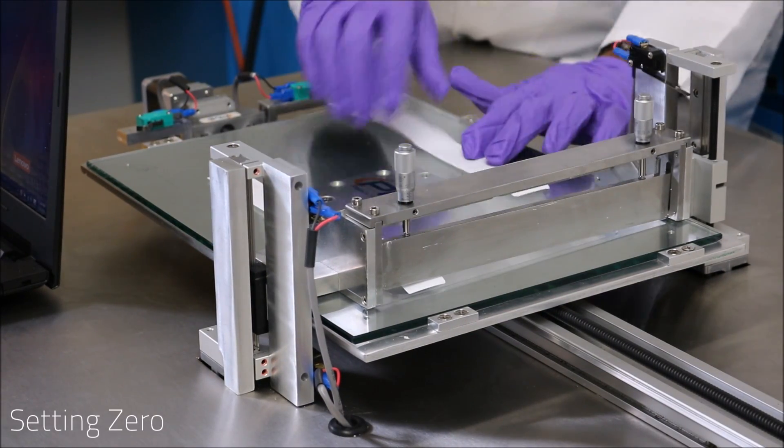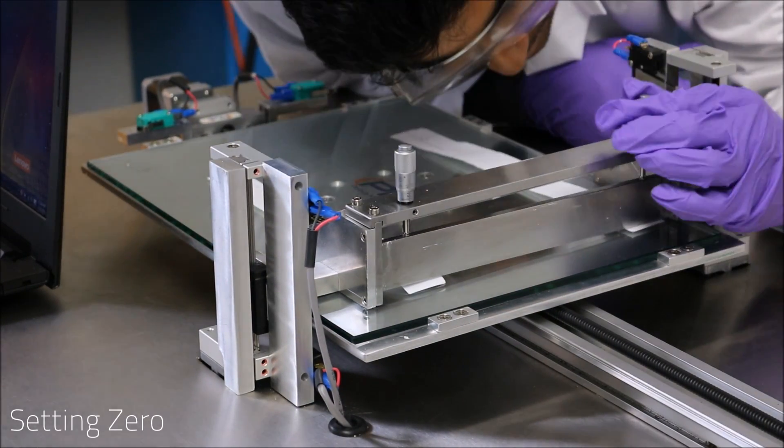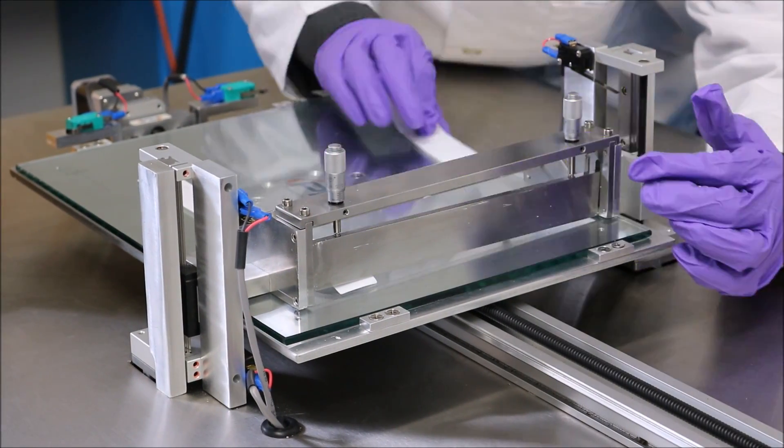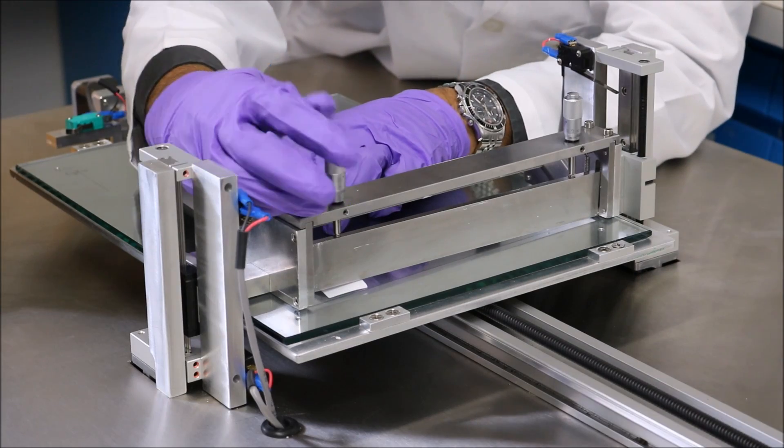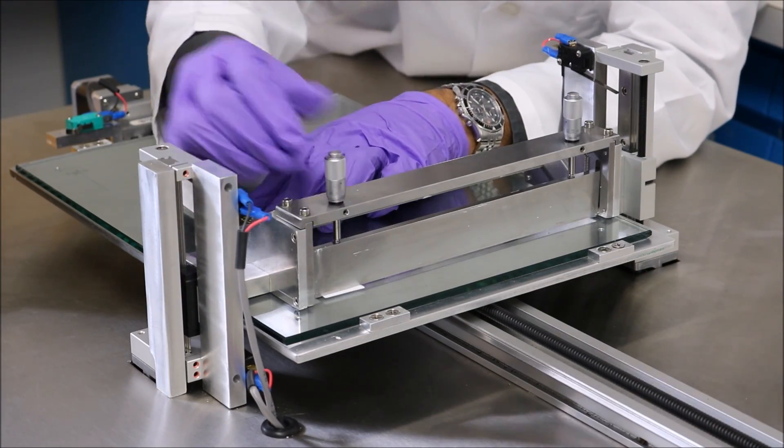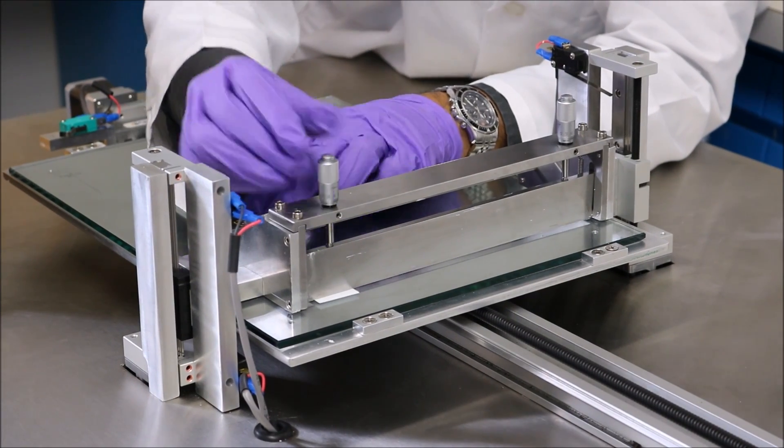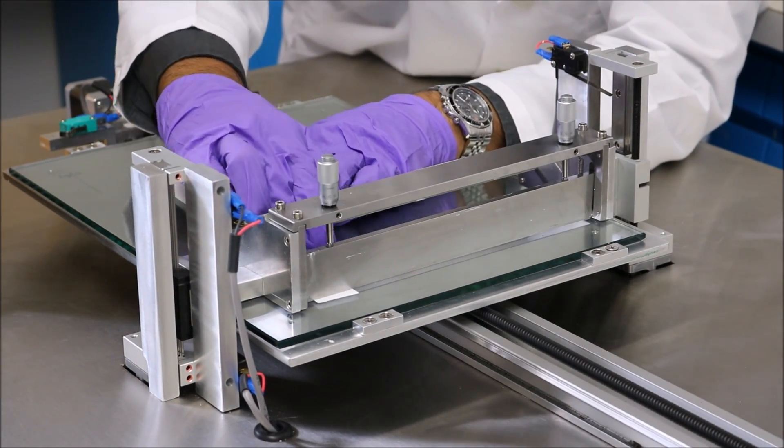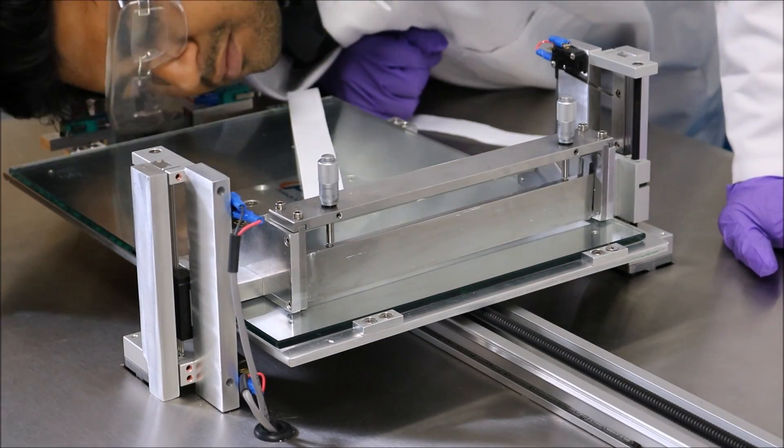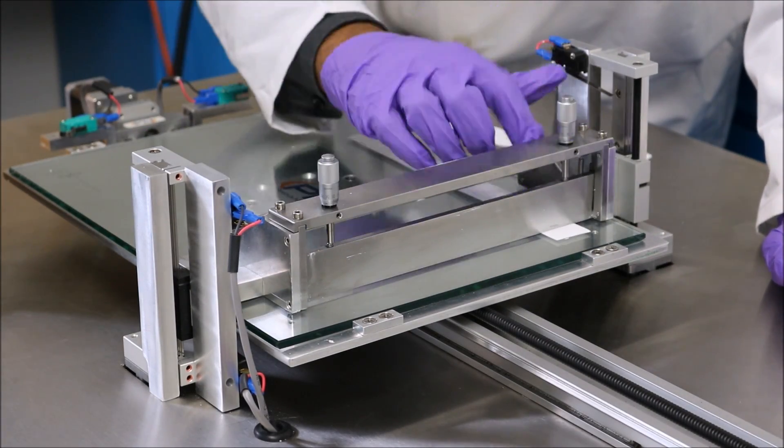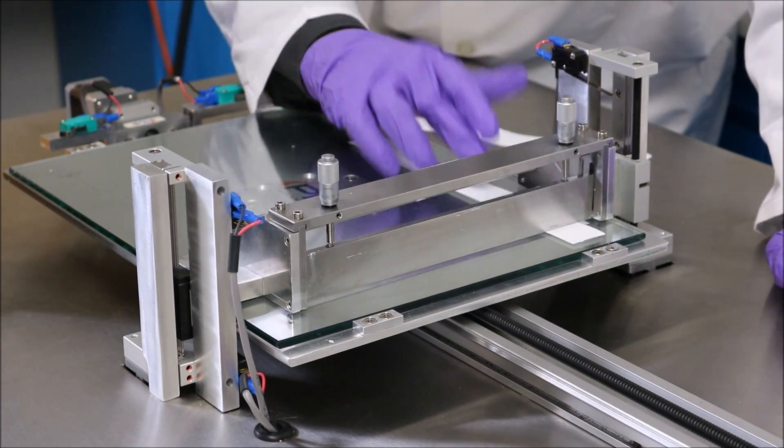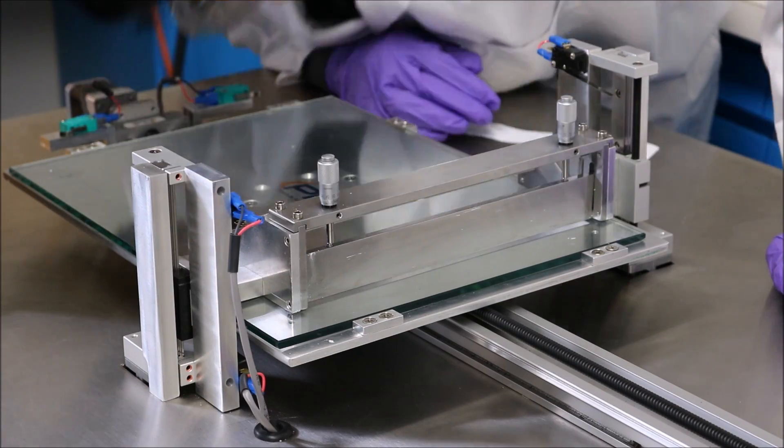Now we will set the zero point for the doctor's blade. This is done in essentially the same fashion as the step before. The only main difference is that instead of using the program to control the actuators up and down, we are now using the more precise micrometer instruments to set the zero point. The goal is the same though. What we are trying to do is to lower it down to a position where the paper is difficult to pull out but is not completely stuck under the doctor's blade.